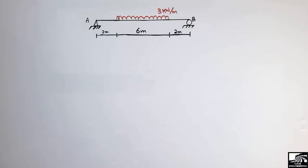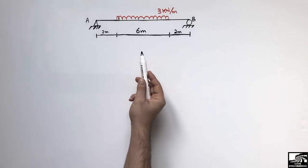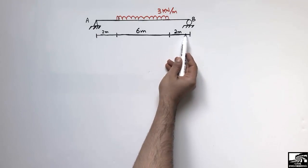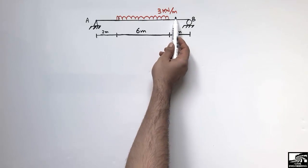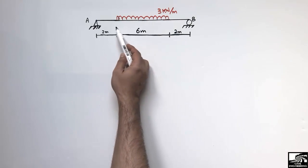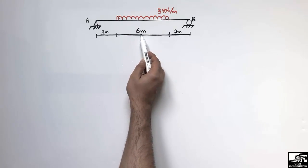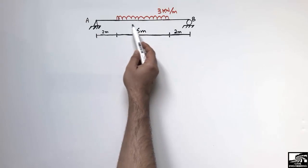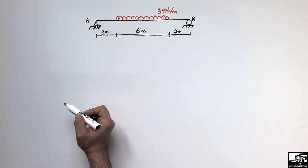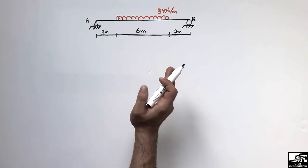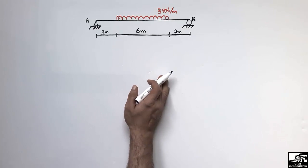Welcome back to the 7 Engineering YouTube channel. Today's lecture is about finding the shear force and bending moment diagram of a simply supported beam with a uniformly distributed load of 3 kN per meter acting over a distance of 6 meters, with this load acting in the middle of the beam.